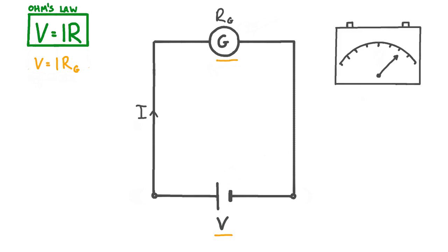The deflection of the needle is proportional to the current in the circuit, and Ohm's law tells us that the current in the circuit is proportional to the voltage. Therefore, the deflection of the needle is proportional to the voltage. However, there is a problem with just using a galvanometer as a voltmeter.